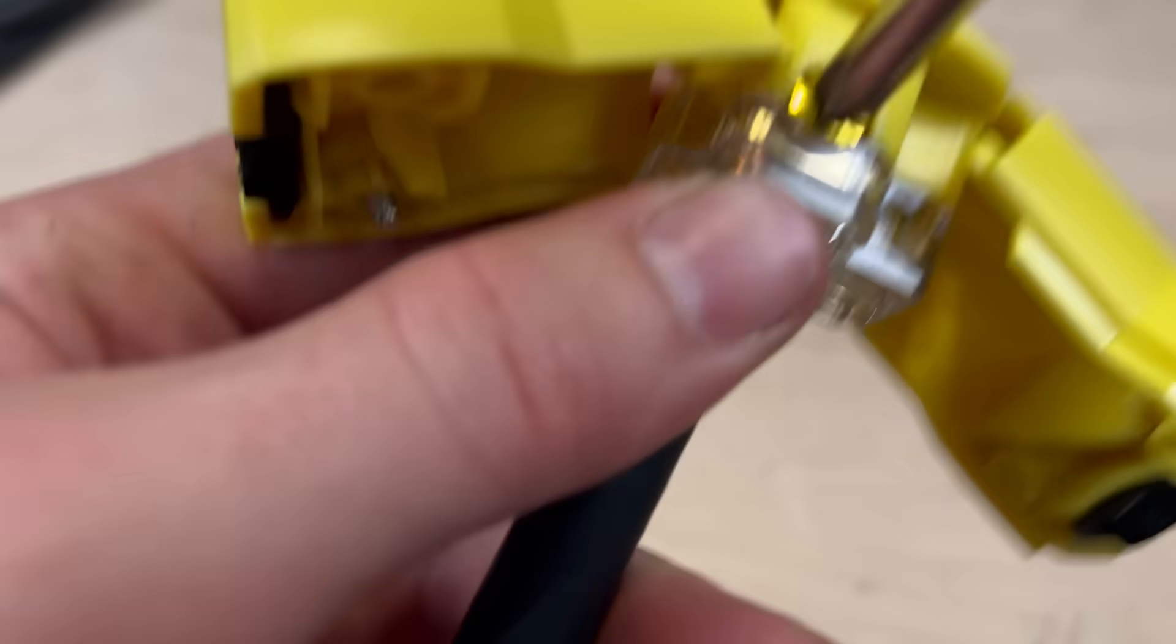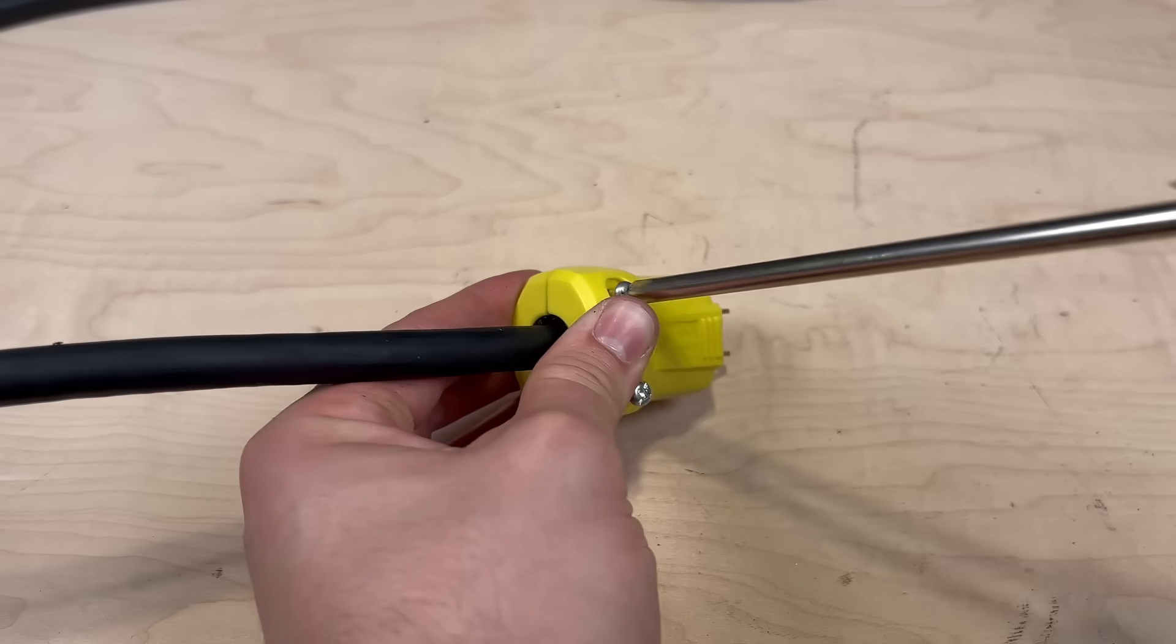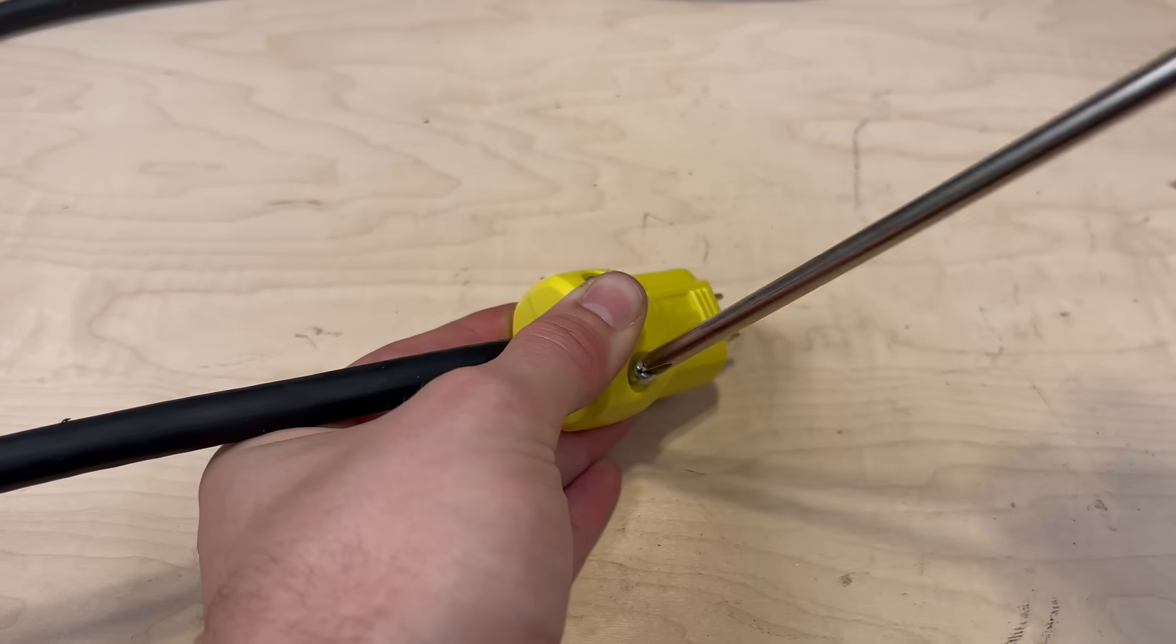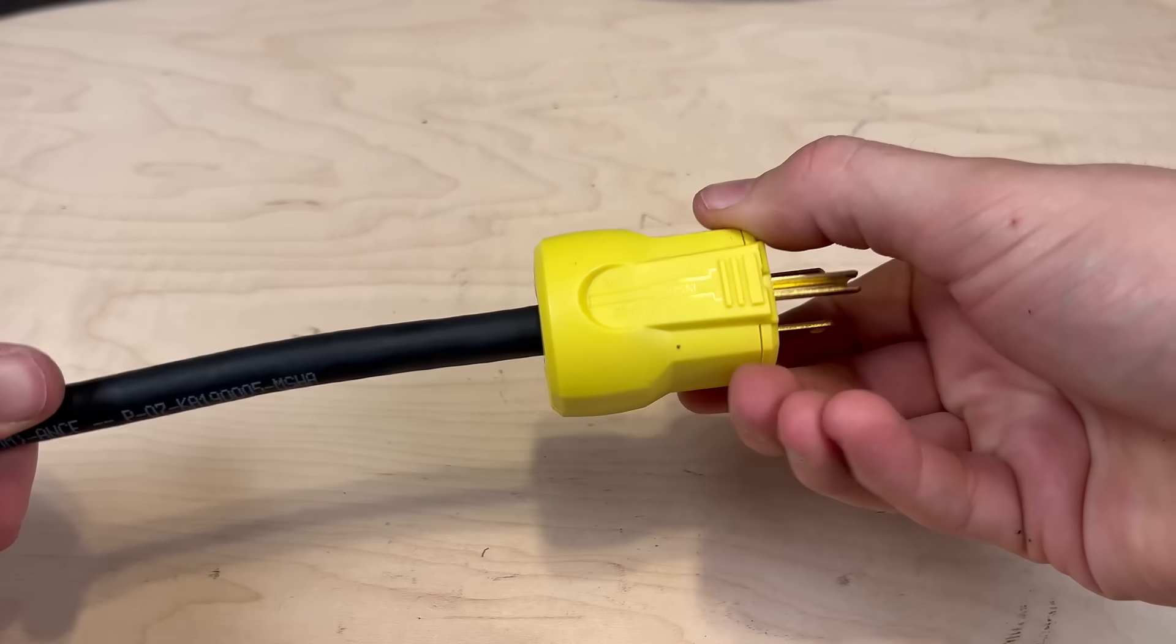Once that's done, close your clamshell and tighten up the last two screws. And just like that, we're finished installing our plug. All you need to do now is give it a good tug to make sure nothing feels loose.